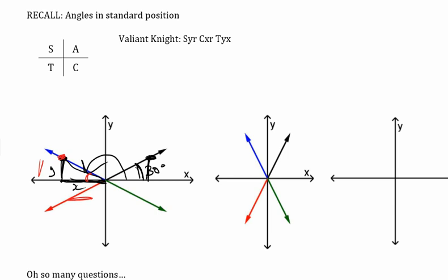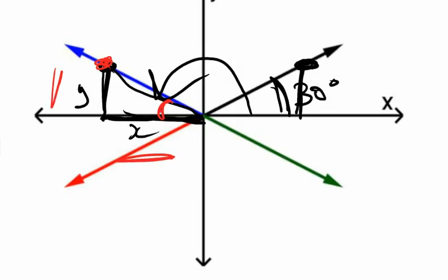Why is sine positive? Because sine is opposite over hypotenuse, and from here, the opposite is y, and y is always positive in the second quadrant. Why is cosine negative? Because cosine is adjacent over hypotenuse, and the adjacent is the x value, and x will always be negative in the second quadrant. The hypotenuse is a length — it's a radius, not a coordinate — so it's always positive.